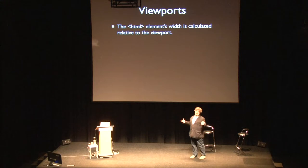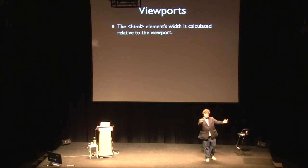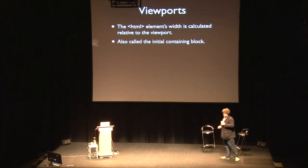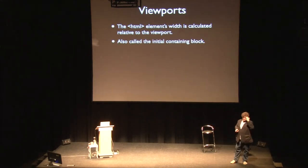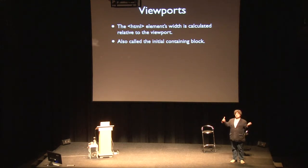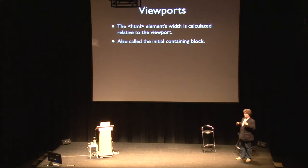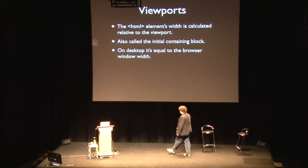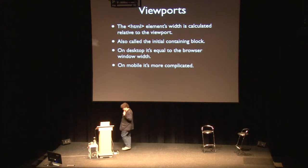CSS has to have some way of telling the browser: your website may not be longer than this, your website has to be constrained to this width. That is the function of the viewport — called the 'initial containing block' in the CSS specifications. It is a block that contains everything, including the HTML elements, and its basic function is to tell you how much space you have for your CSS layout. All percentages are calculated relative to the initial containing block — the viewport. On desktop, the viewport is equal to the browser window. On mobile, it's a lot more complicated — and that's what my talk is going to be about.